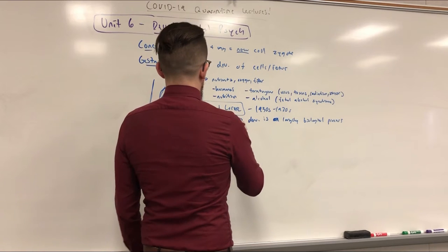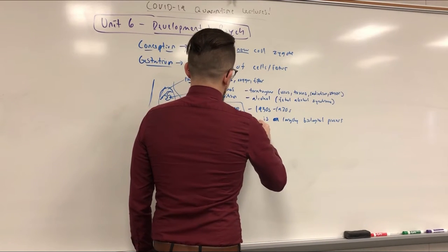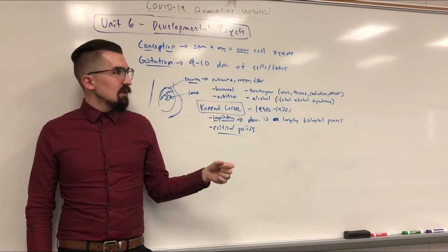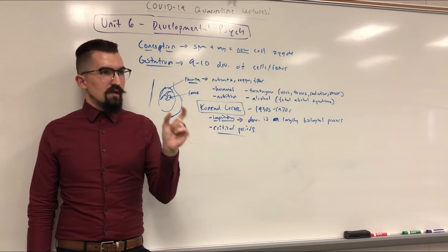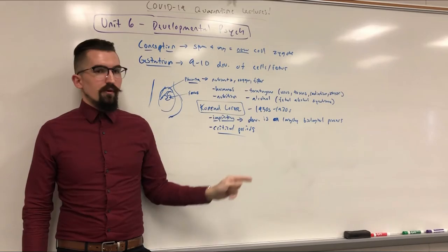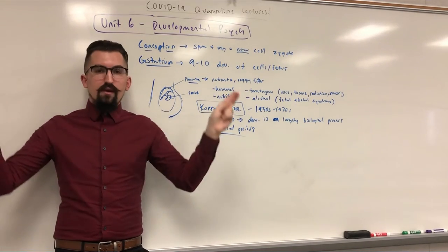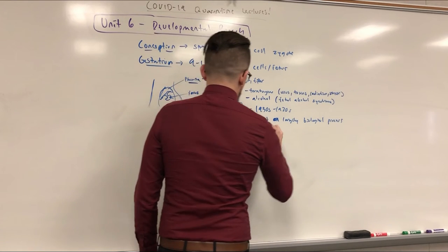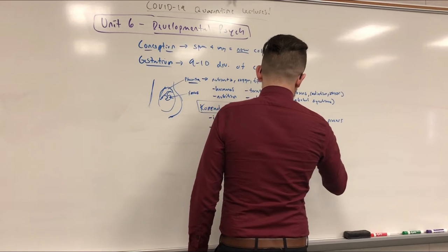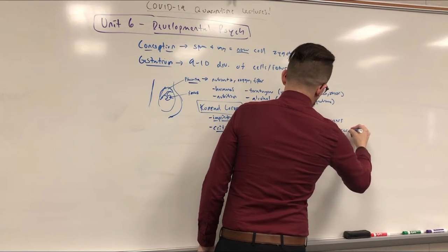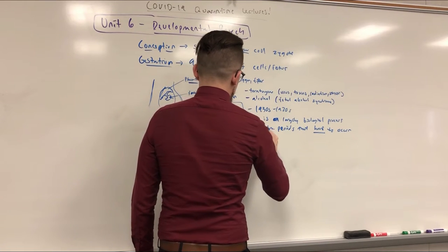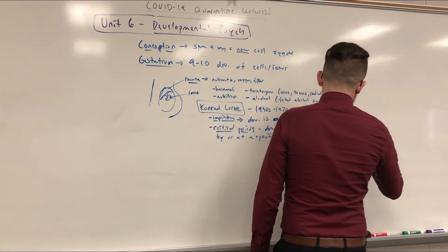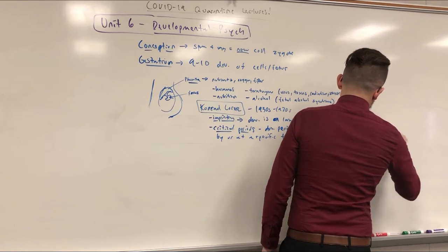Critical periods are developmental periods that have to occur by or at a specific time or they may not change or develop. You can have this for humans too. In your early years of life there are several things you have to learn to do, which humans do automatically — language, for example. Humans are uniquely programmed to want to absorb language, understand it, then replicate and express themselves. You don't have to exactly teach a kid to talk — as long as they're exposed to language, they'll pick it up automatically.